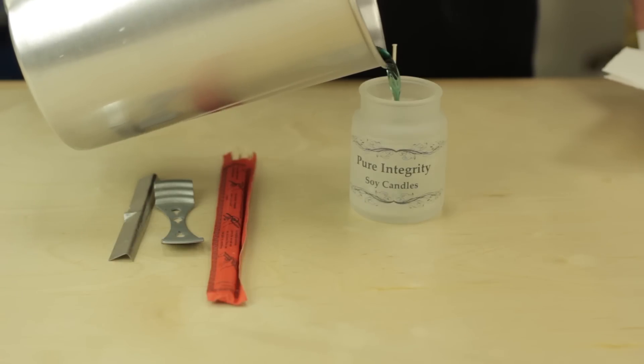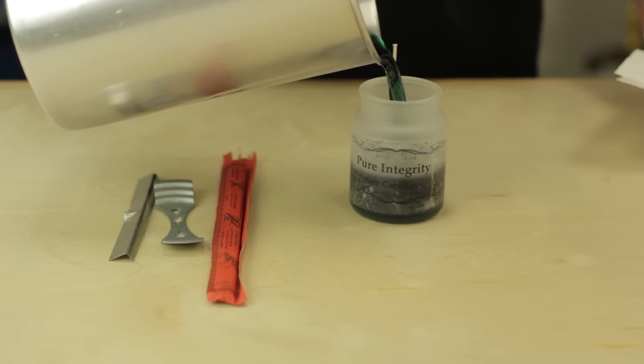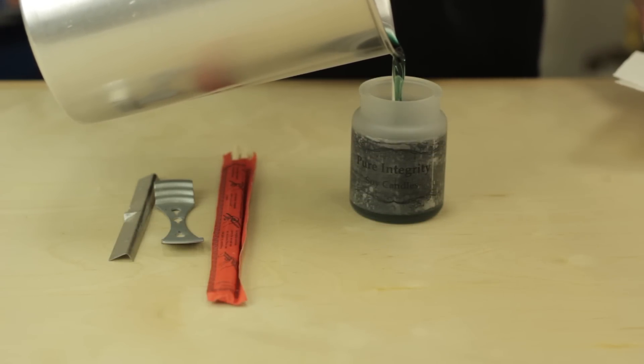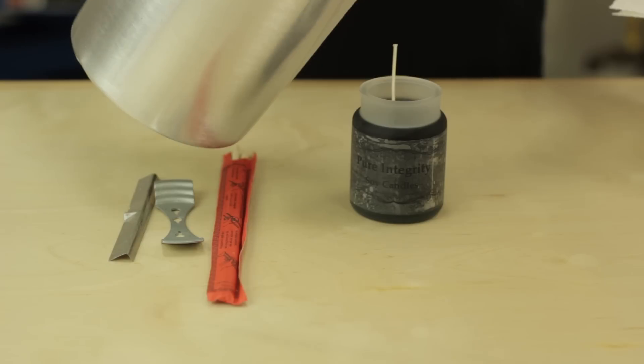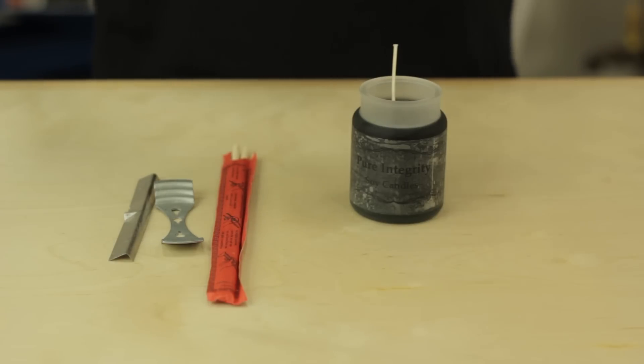Once the wax is completely liquid and melted, you can take it off the burner and allow it to cool down and get just slightly cloudy, and then you're ready to pour.